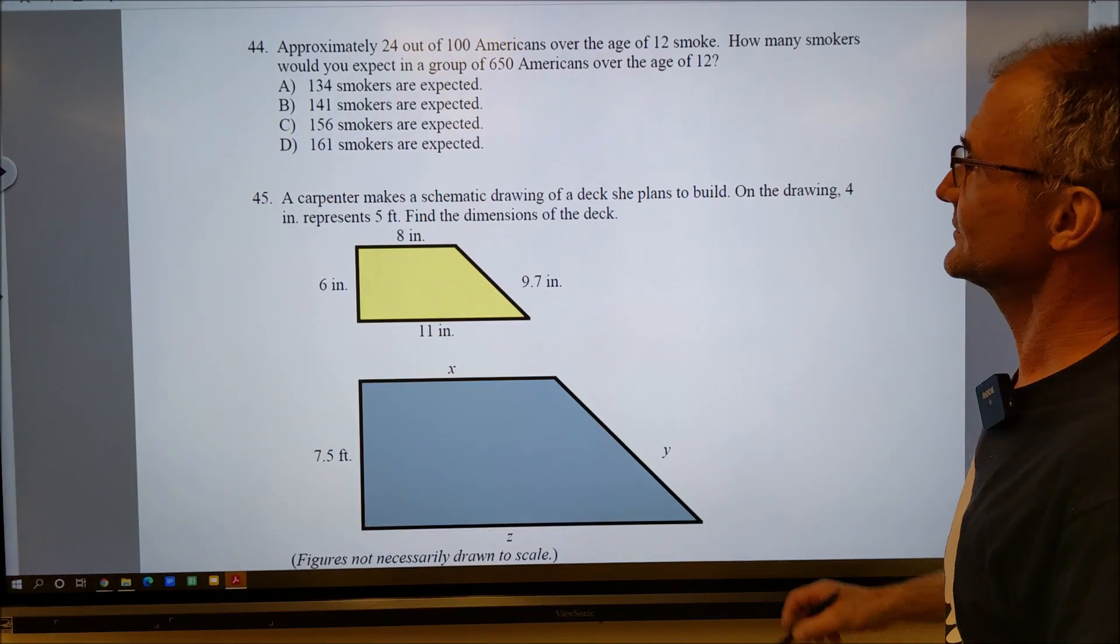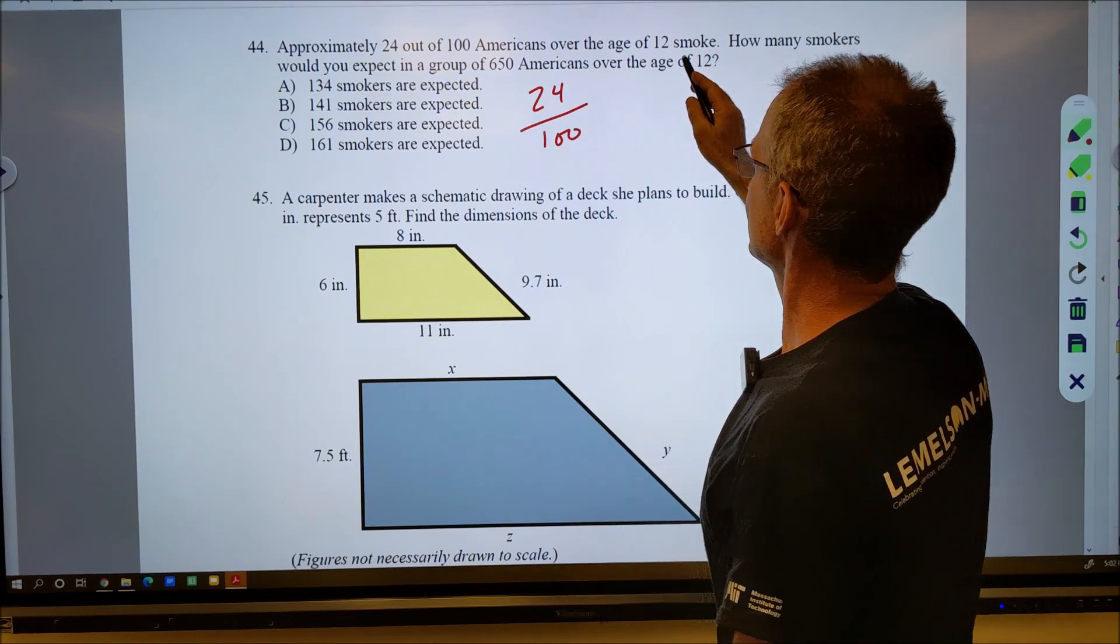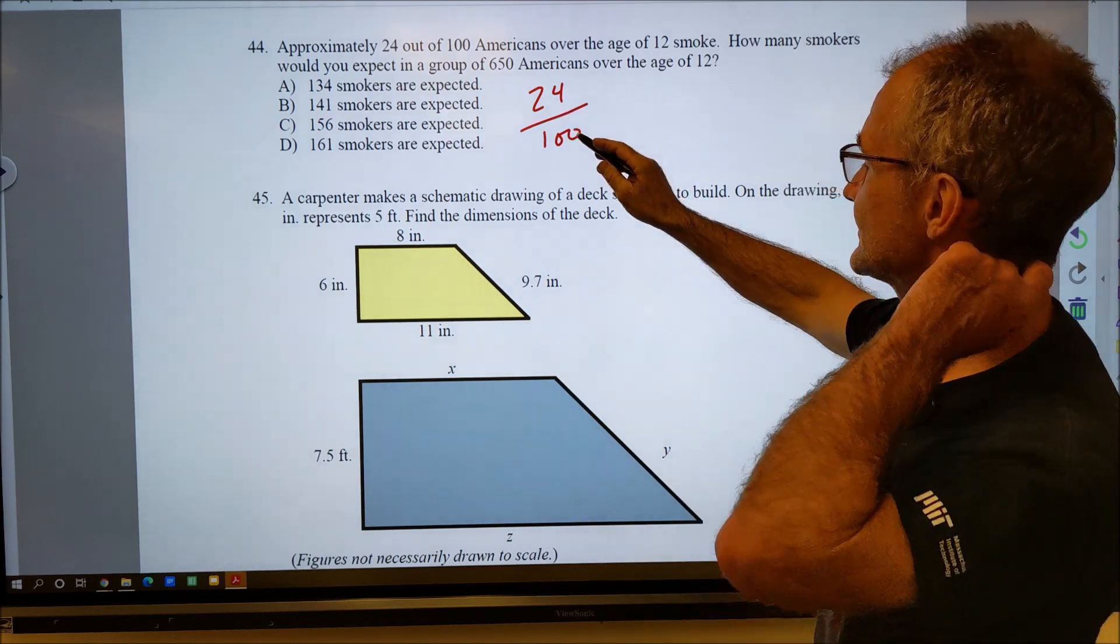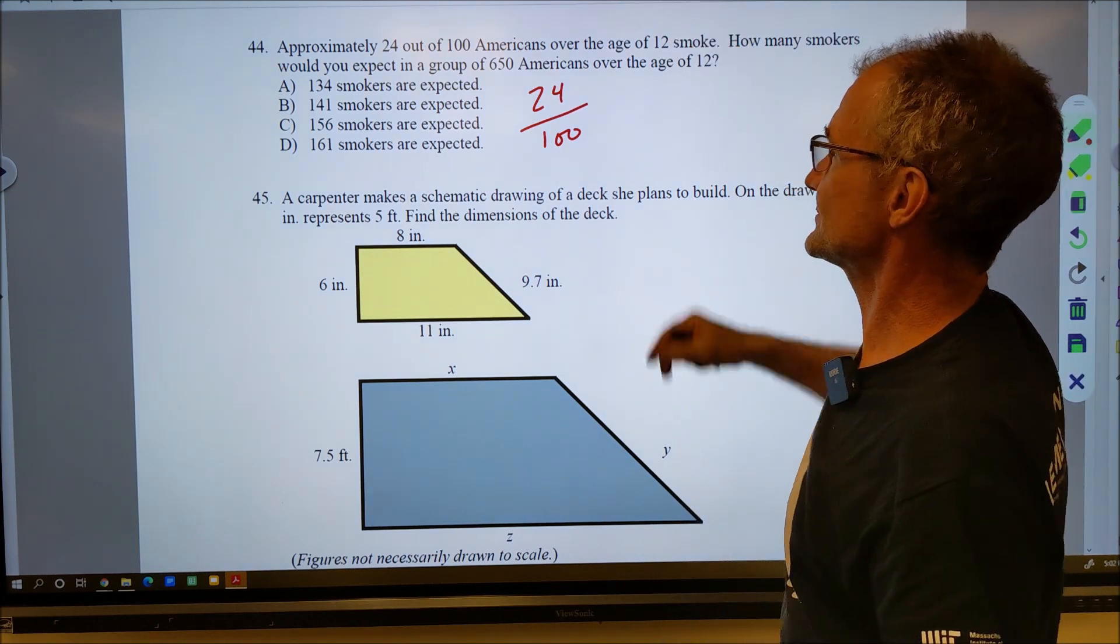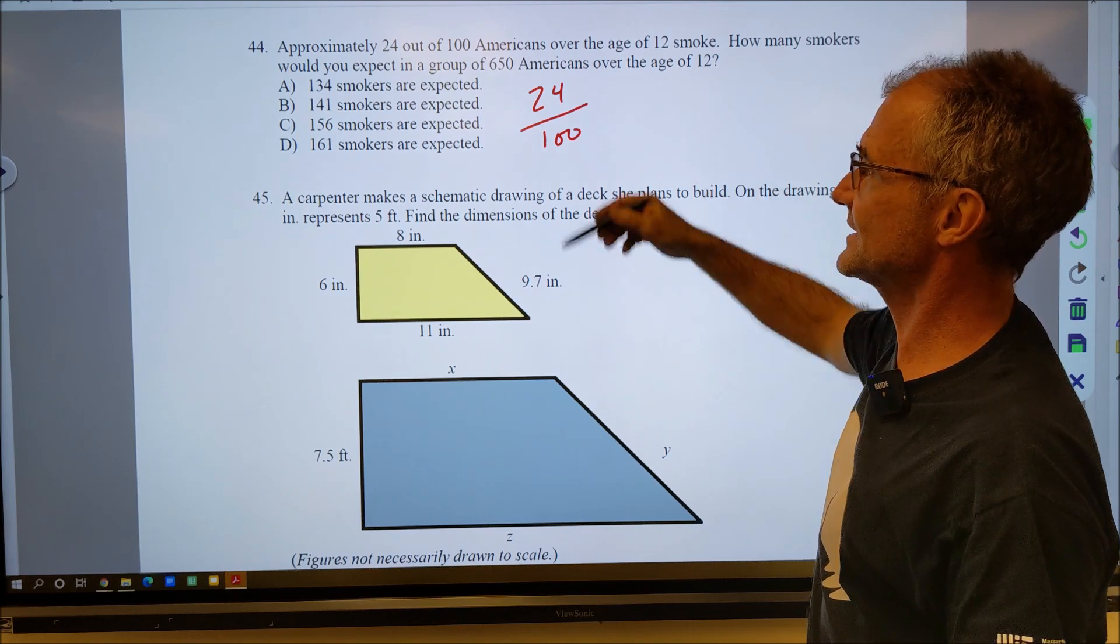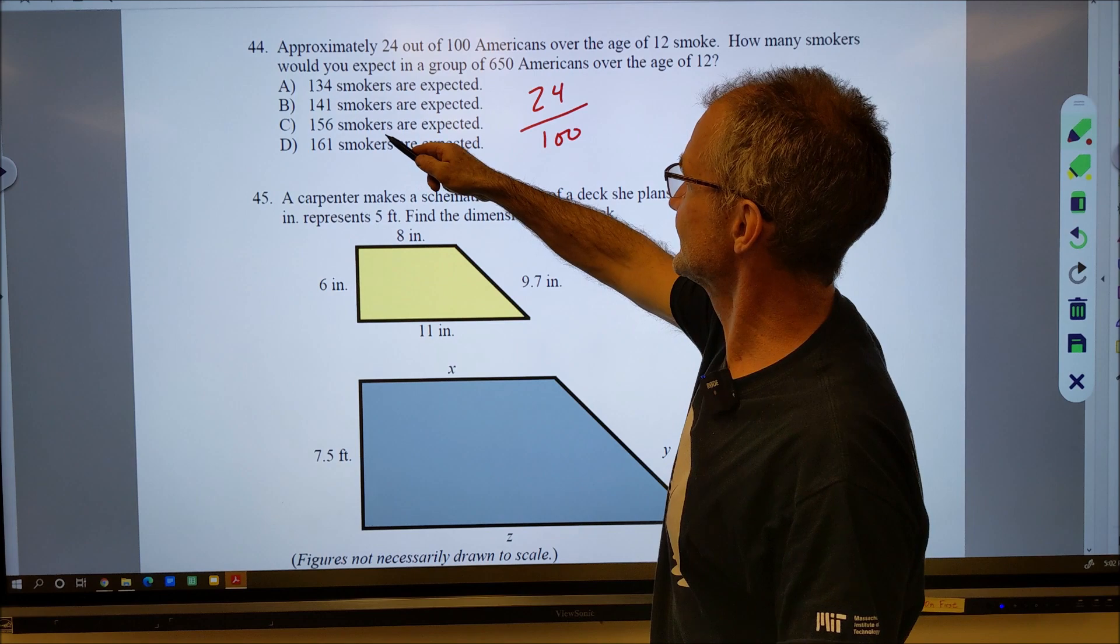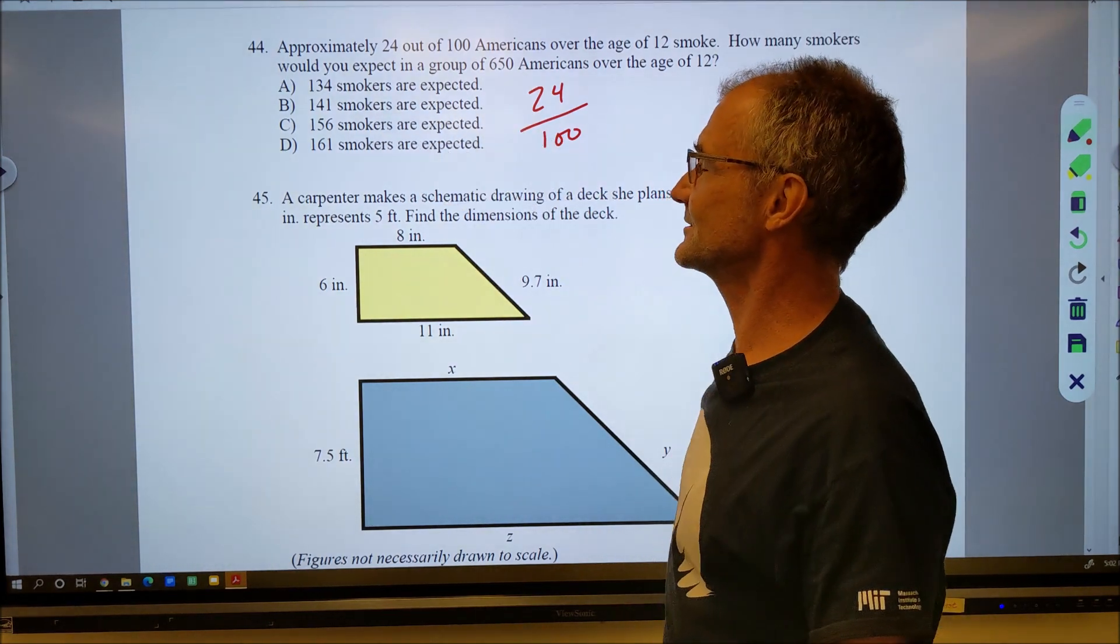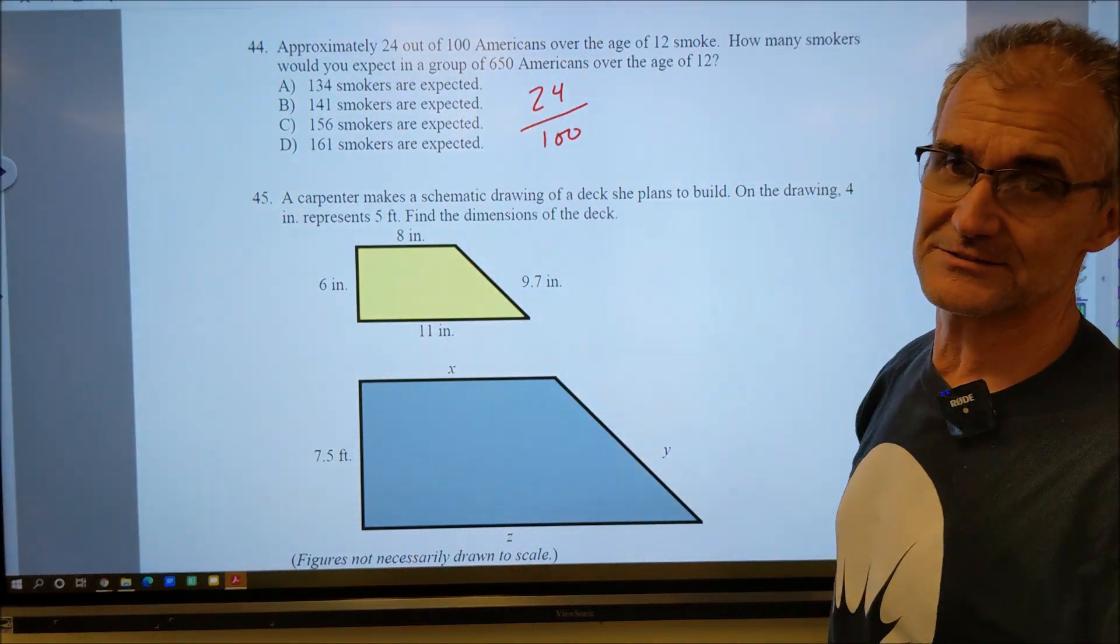Number 44: 24 out of 100 Americans over the age of 12 smoke. How many smokers would you expect in a group of 650 over the age of 12? So that's really, those numbers aren't going to come into it. I just want 24 one-hundredths or 24% of 650. Let me check these answers and see if I could just figure out, you know, it's about a quarter, but they're all pretty close to about a quarter. So I'm going to have to do the math. I won't be able to eliminate answers that don't make sense.